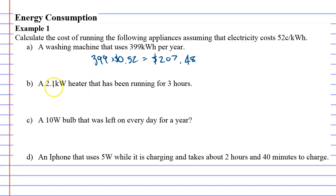Next one: a 2.1 kilowatt heater that has been running for three hours. We know it's 2.1 kilowatts, but we're going to times it by 3, giving us 6.3, and that means it's used 6.3 kilowatt hours.